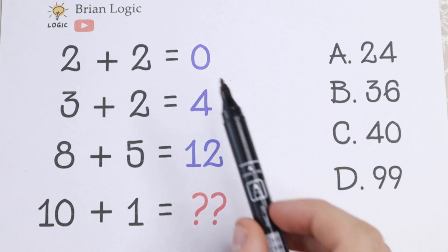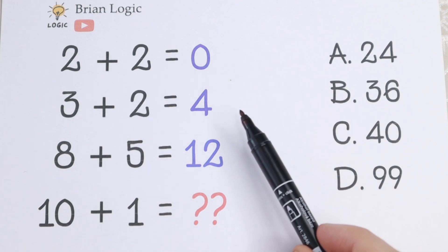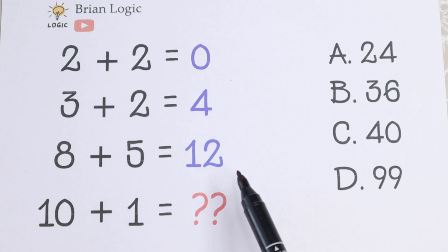A, B, C and D. So 2 plus 2 equal to 0, 3 plus 2 equal to 4, and 8 plus 5 equal to 12. And we need to find the last row.